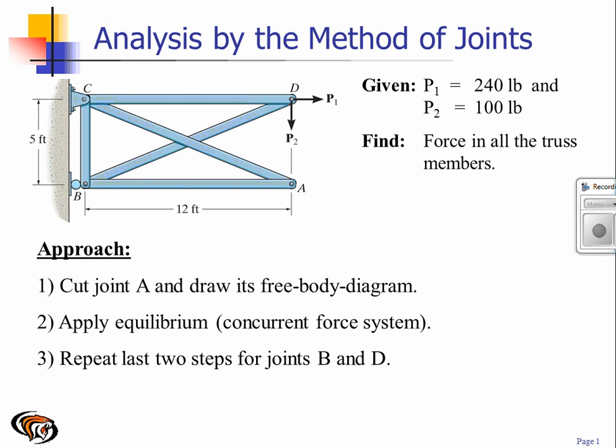So in this case we'll start with joint A and then we'll apply equilibrium. Since the forces are going to be concurrent, we only have two equations of equilibrium: sum of the forces along the X and sum of the forces along the Y.